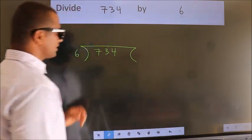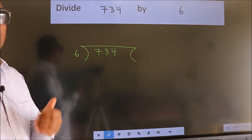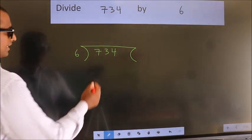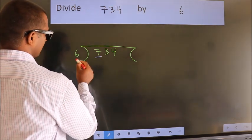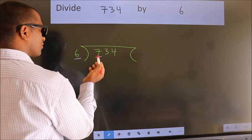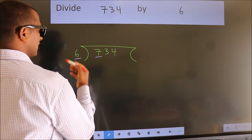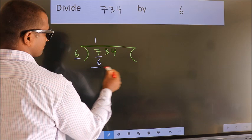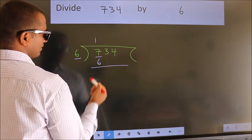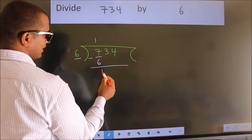This is your step 1. Next, here we have 7, here 6. A number close to 7 in the 6 table is 6 once 6. Now we should subtract. We get 1.